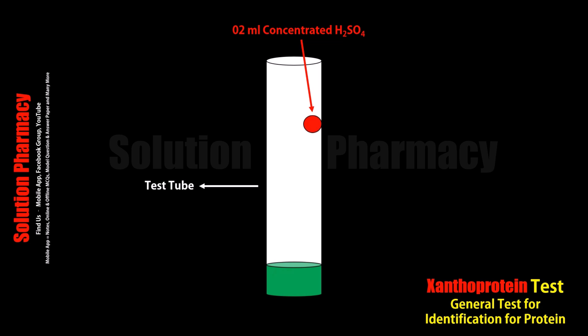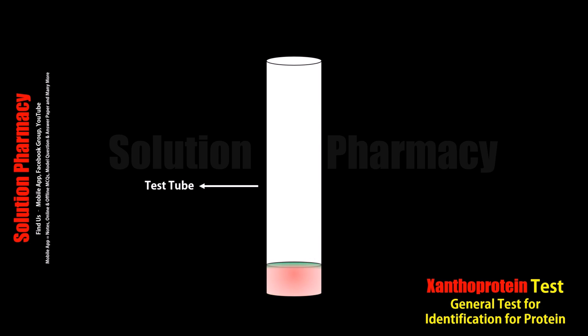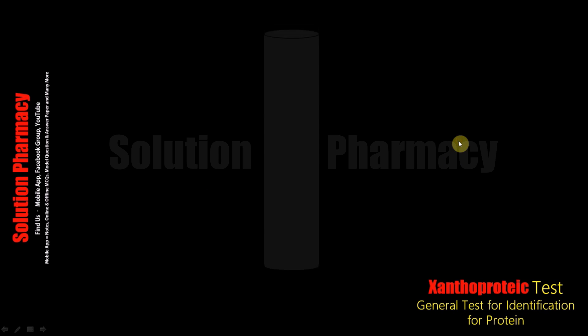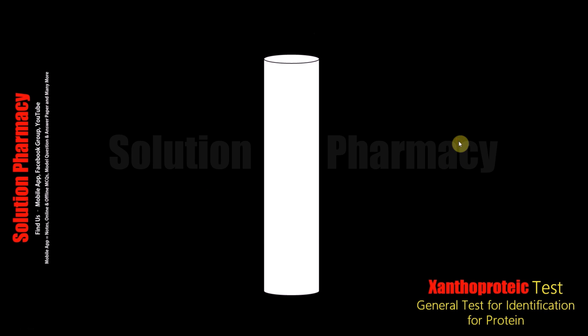Examples of protein samples we can use to perform this xanthoprotic test — such as albumin, globulin, and casein — all contain aromatic amino acids and will give positive results. So now let's see how this test is performed through animation.